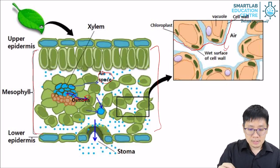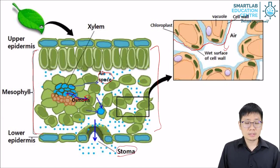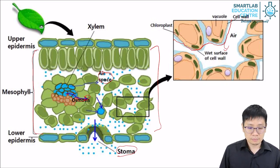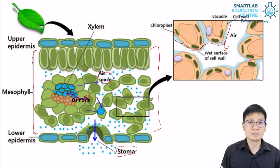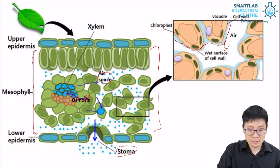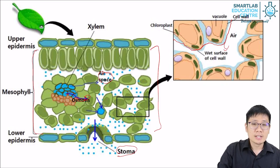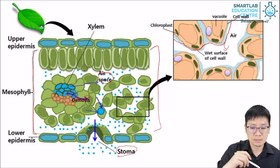During the day, the stomata open. Down here, we have a hole called a stoma. Stomata are like windows — when they are open during the day, gases can move in and out of the leaf. This is how the leaf gets oxygen or carbon dioxide. This is also where water vapour escapes from the leaf, moving out from the leaf here.